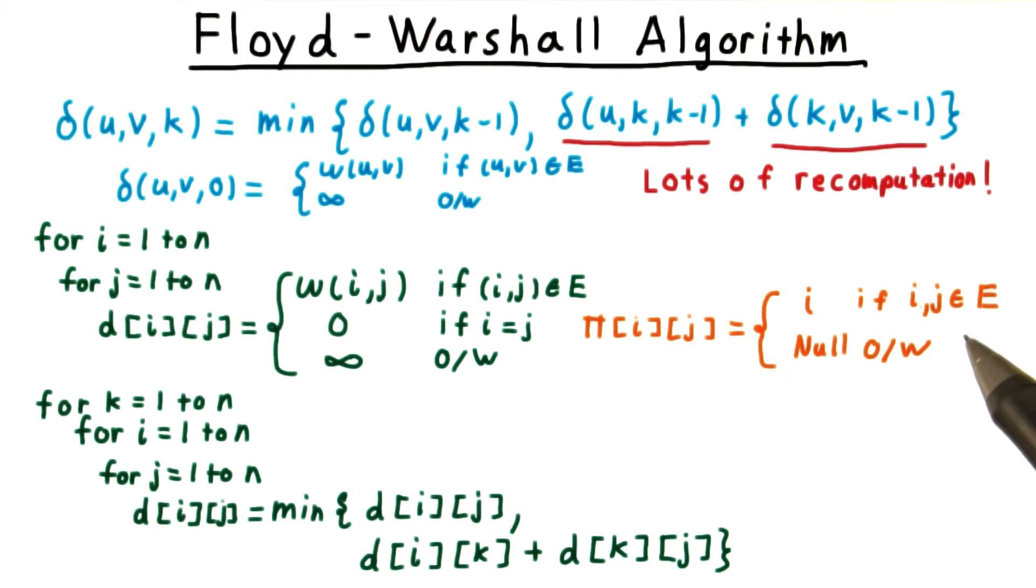this is just the other vertex on the incident edge. In the update phase, we either leave the predecessor alone, or if we are going to change the path, then we switch it to the predecessor of the second half of the path from k to j.